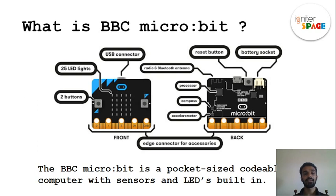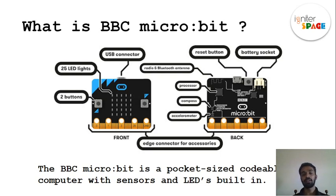Then we have 25 LEDs. These are not just random lights — they are also light sensors, which I'll explain as the lesson goes on. We also have a USB connector, which we use to connect the Micro:bit to the computer.